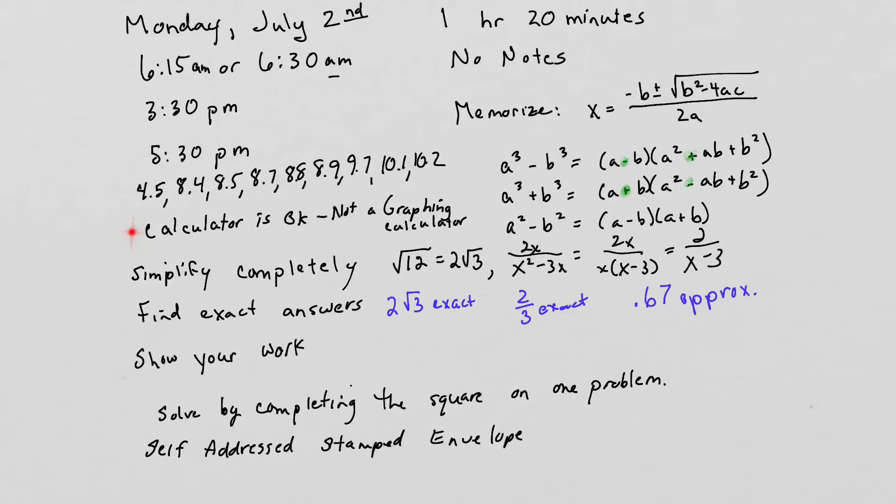When you look at the exam, there'll be some general instructions on the top. It will say simplify completely, so that means things like taking the square root of 12 and writing it as 2 times the square root of 3.